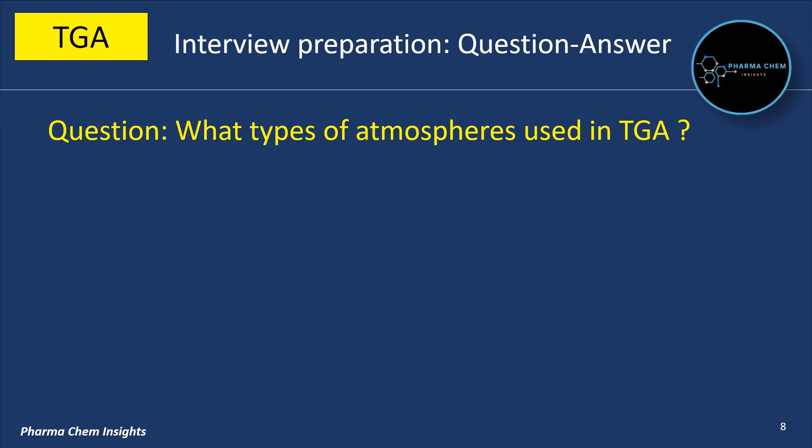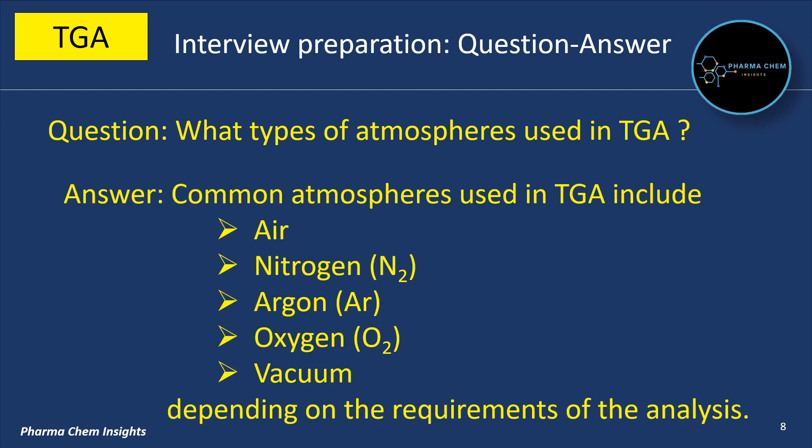What type of atmospheres are used in TGA? Common atmospheres used in TGA include air, nitrogen, argon, oxygen, and vacuum, depending on the requirements of the analysis.